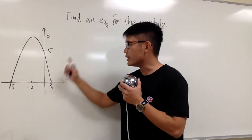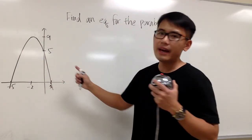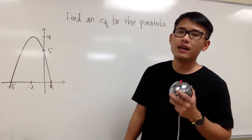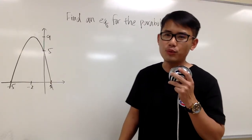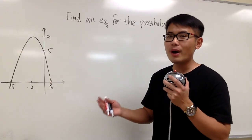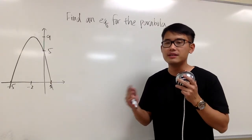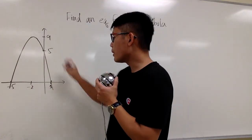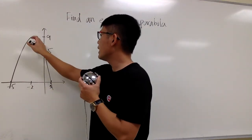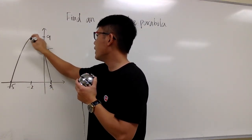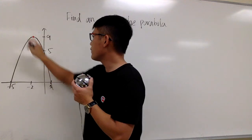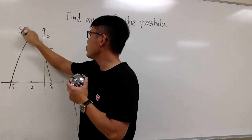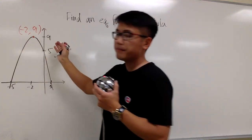Here we are going to write an equation for this parabola, and I'm going to show you guys two forms. The first one is going to be the vertex form, and the second one is going to be the standard form. As we can see, this parabola right here, we have this vertex here, and I'm going to label that for you guys. It is negative 2, comma, positive 9.